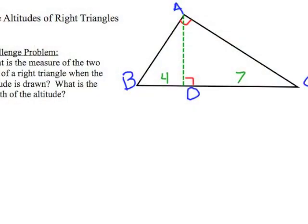All right, here's a challenge problem for you. This is kind of a summary of theorems 8.1, 8.2, and 8.3. I'm given the right triangle ABC and I draw the altitude. The altitude splits the hypotenuse BC into two segments, BD and DC.